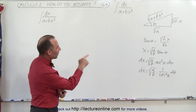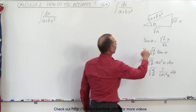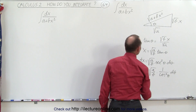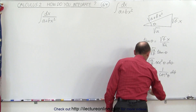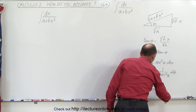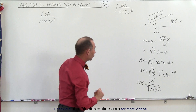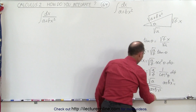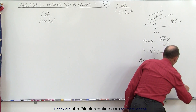Now we have dx, and a plus bx squared — that's the hypotenuse. We can say that the cosine of theta is equal to the adjacent side, the square root of a, divided by the hypotenuse, which is the square root of a plus bx squared. Notice that if we square both sides, we can solve for a plus bx squared. So we can say that a plus bx squared is equal to a divided by the cosine squared of theta.